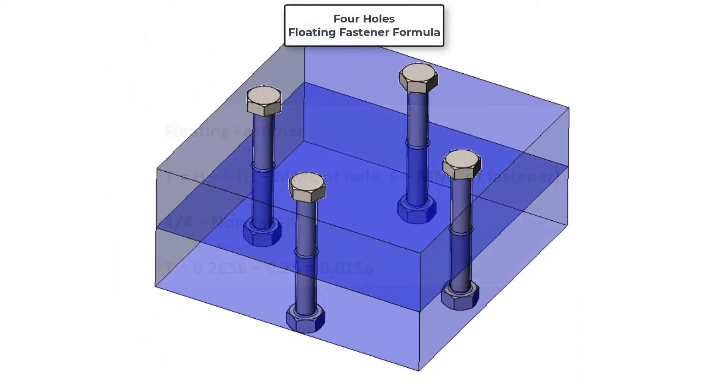If the same two parts are now held together by four bolts and nuts as shown here, the allowable positional error will be less than for two bolts. The worst case scenario would now be if each hole was out of position at a 45 degree angle away from the center of the holes.